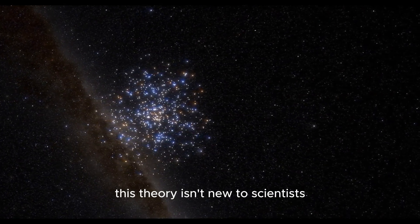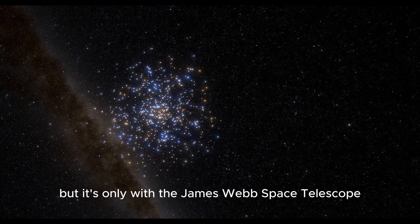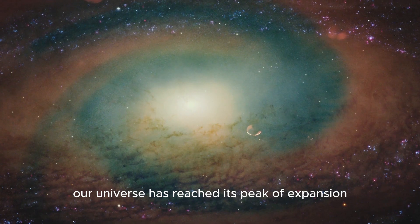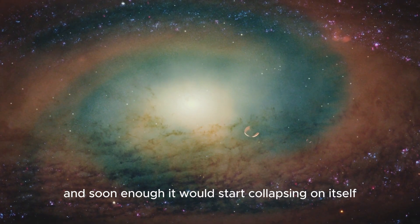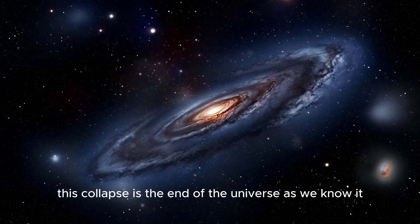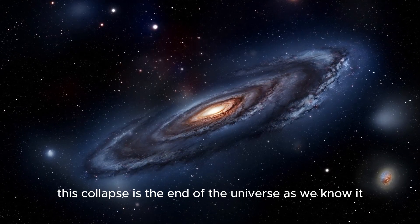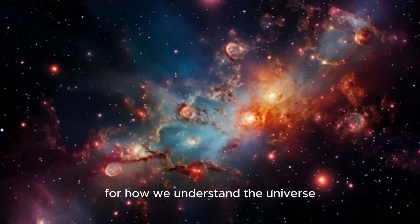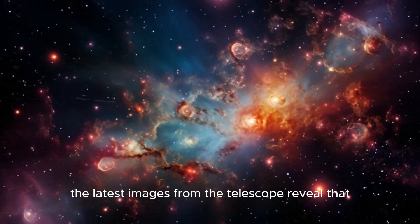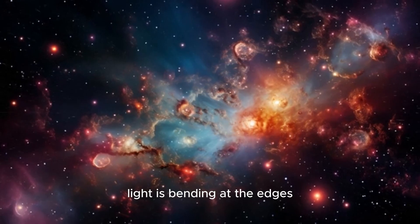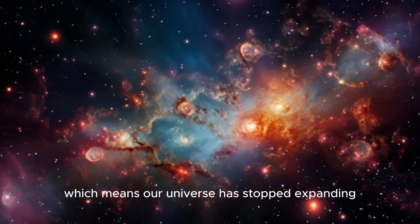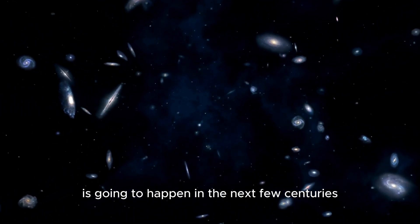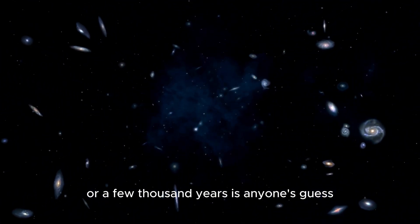This theory isn't new to scientists, but it's only with the James Webb Space Telescope that we have the evidence to confirm it. Imagine it as a full circle. Our universe has reached its peak of expansion, and soon enough it would start collapsing on itself. This collapse is the end of the universe as we know it. The James Webb Space Telescope is an amazing creation that is paving the way for how we understand the universe. The latest images from the telescope reveal that light is bending at the edges, which means our universe has stopped expanding, and it also means that we're closer to our ultimate end than we thought.